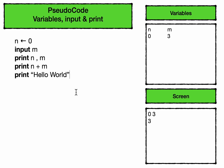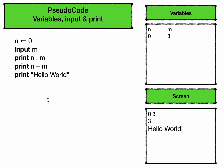The last line doesn't have any variables but has quotation marks. This means the literal string 'hello world' will be printed to the screen as it's written. So after all these lines of code have occurred, the screen will have this output.